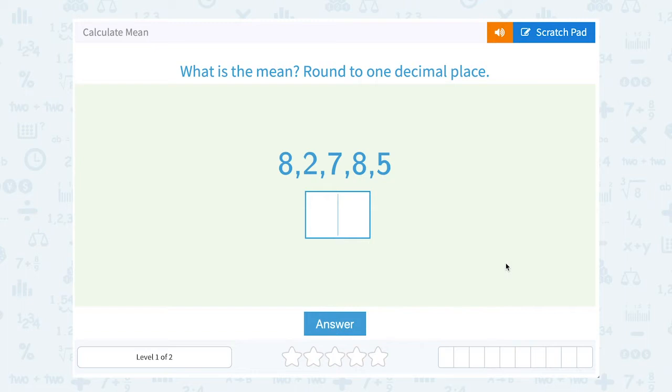Let's take a look at how to calculate mean. What is the mean? Round to one decimal place.